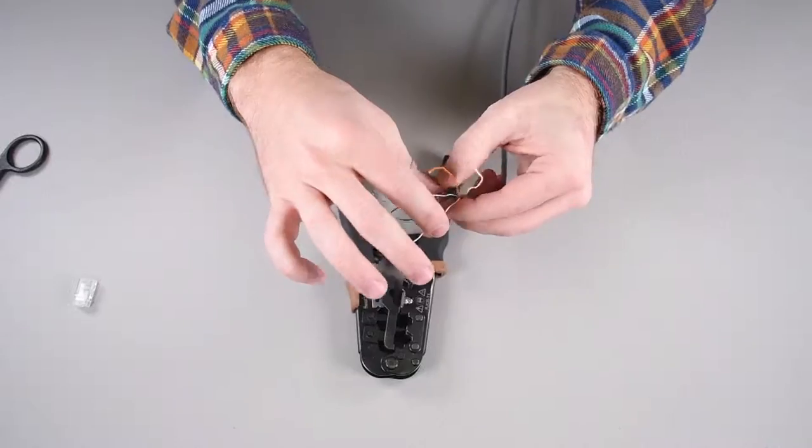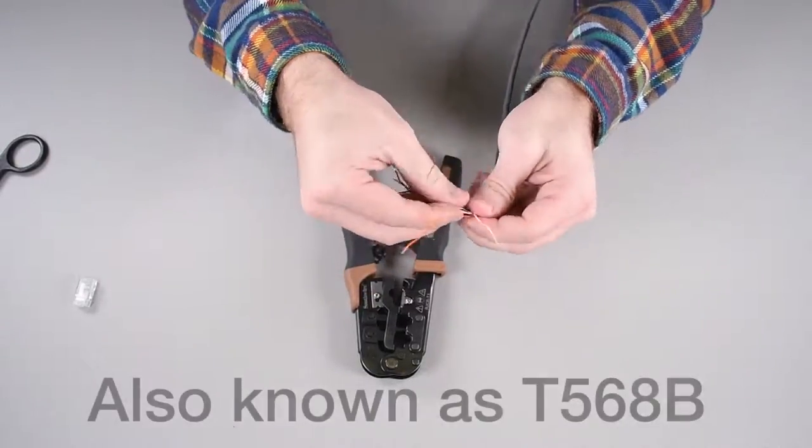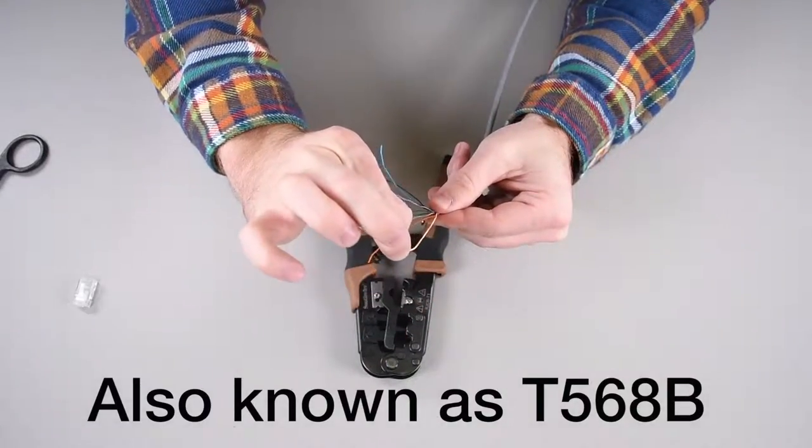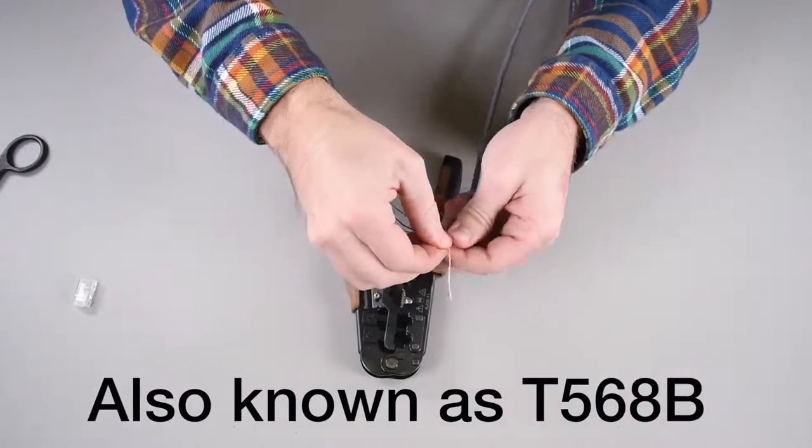The order I commonly use is orange white, orange, green white, blue, blue white, green, brown white, brown. And as I do this, I'm kind of pinching and bending at the same time. That gets all the little waves out of the wire like that.